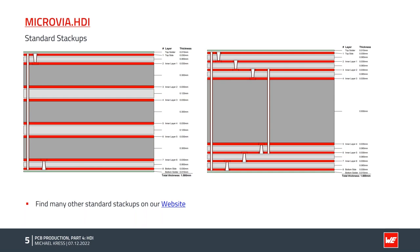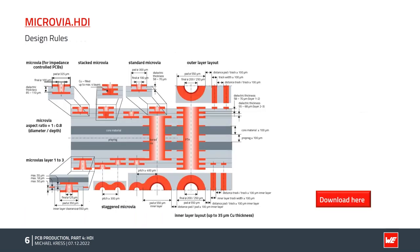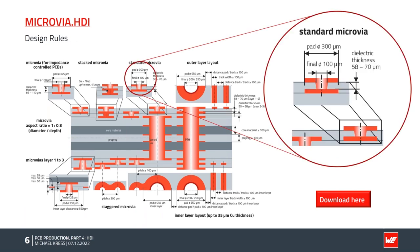Here we use two cores in the inner layer and then press on the outer layer the microwires. This goes up to eight layers with three lamination processes, and all the in-between layer stackup standards you can find and download on our website. You can also look on our website for the microwire design rules. The standard microwire pad size today is 300 microns, the dielectric thickness is 58 up to 70 microns, and the final pad diameter from the microwire drill hole is 100 microns.